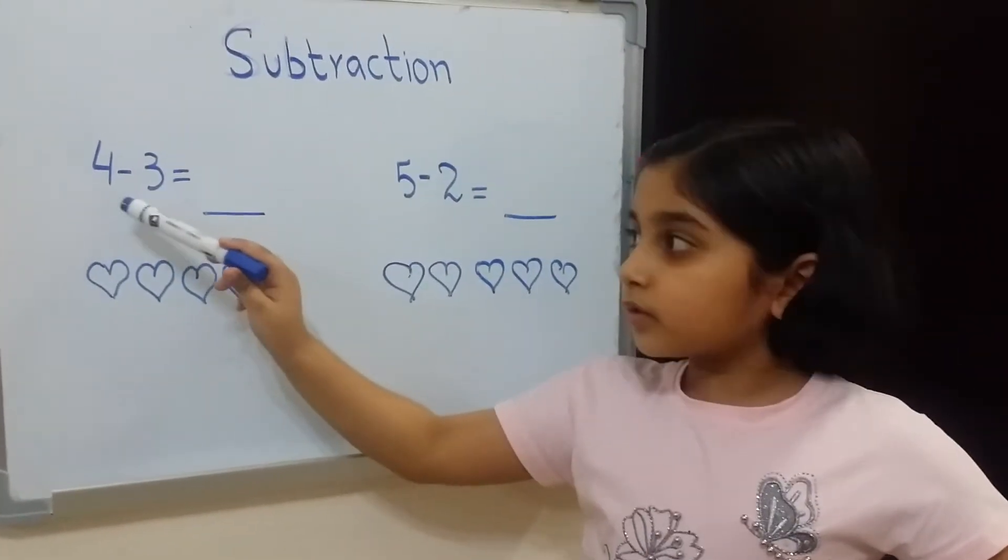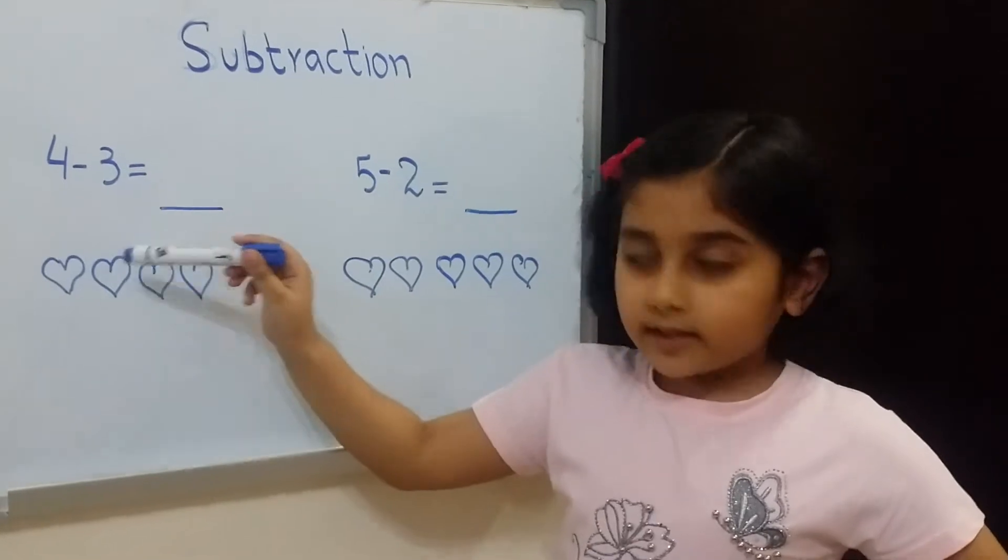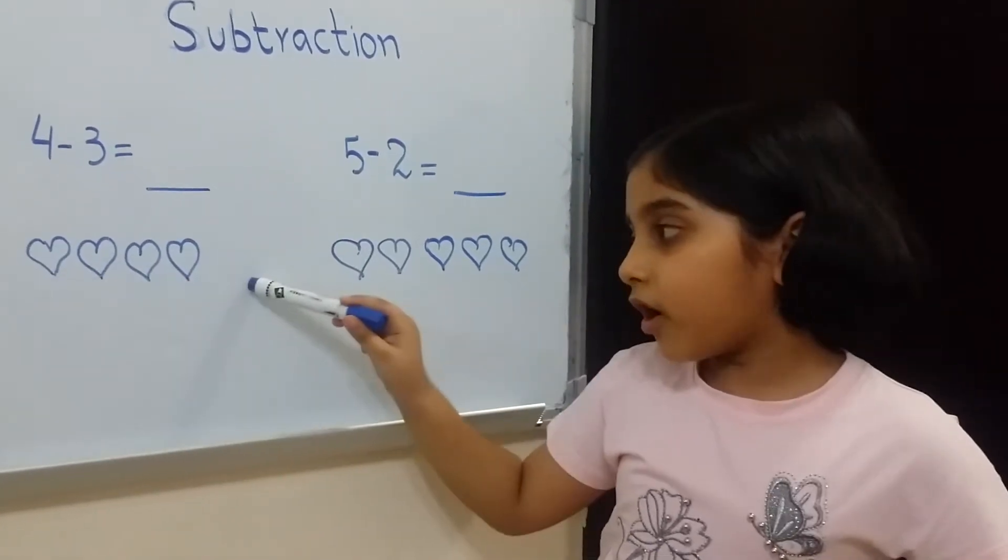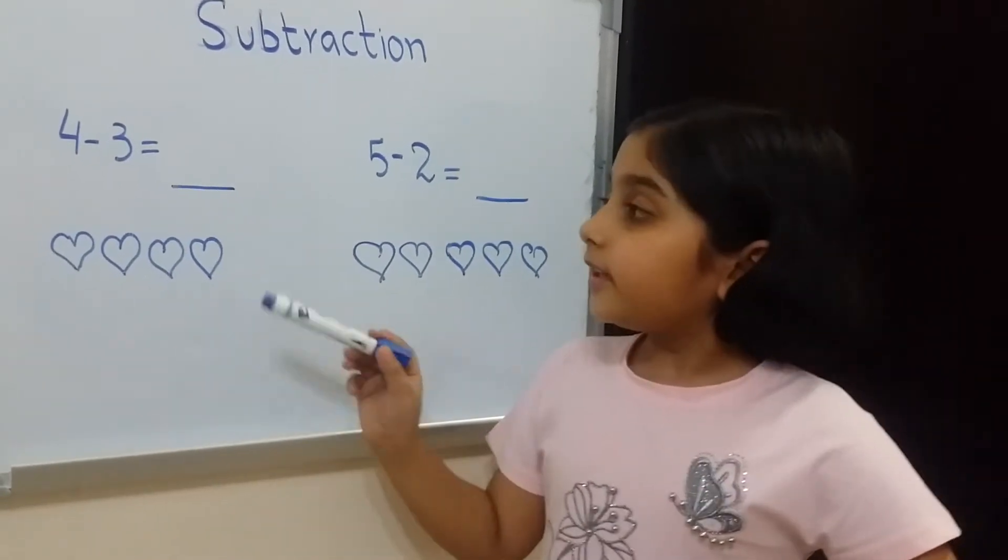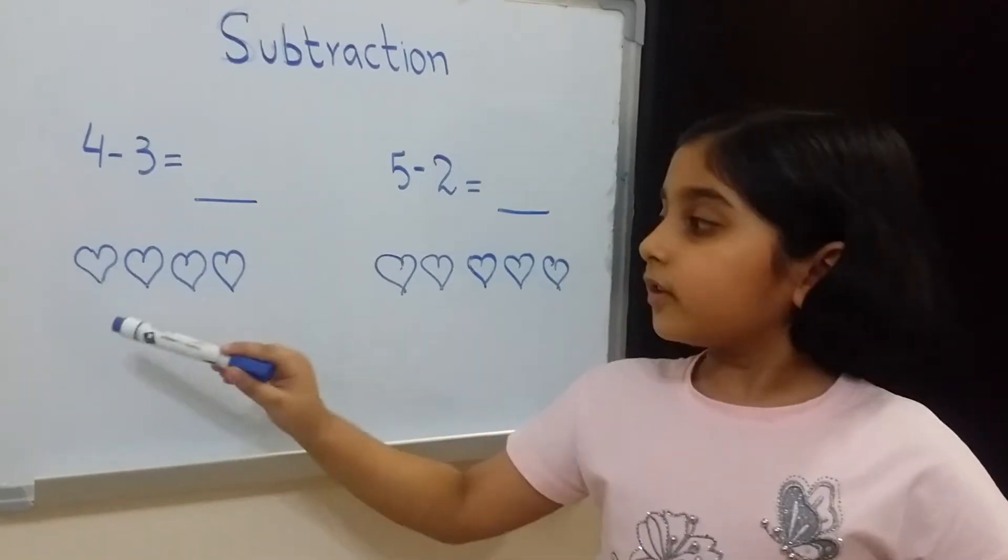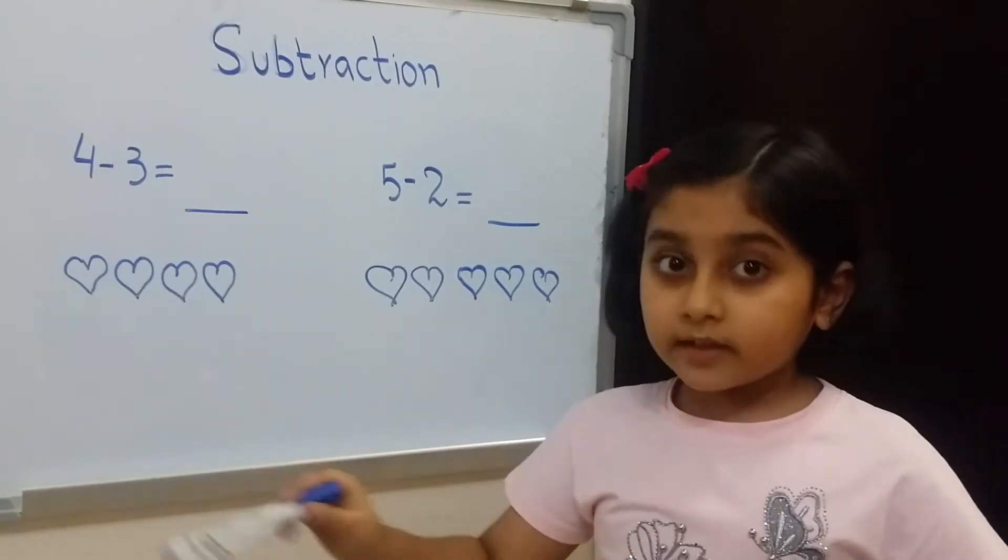So we will do the first question, 4 minus 3. So we have 4 hearts if it's difficult for you. So you make 4 hearts. Then you have 3, then you have to cut 3 hearts.